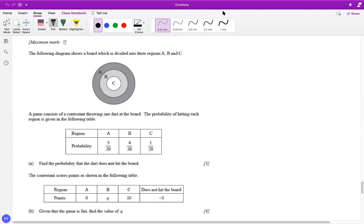All right. So here, in this example, it's pretty much similar to what we just did. The question here is that there is a dart and the probability of hitting the dot in each region is A, it's 5 over 20, B, 4 over 20, and C is 1 over 20. Now find out the probability that the dot does not hit the board.